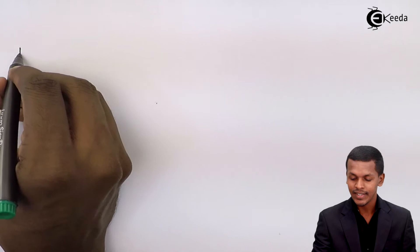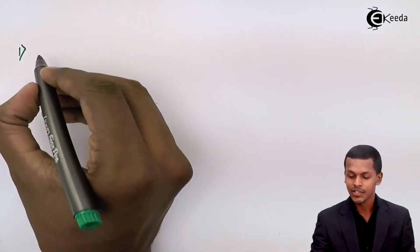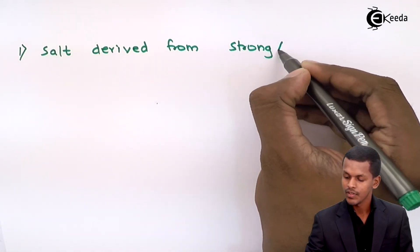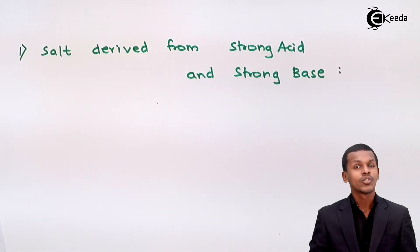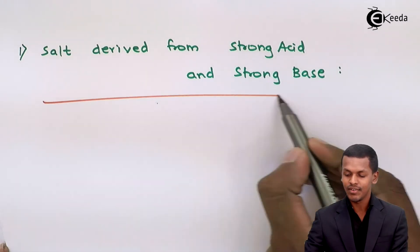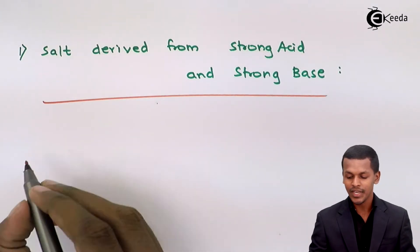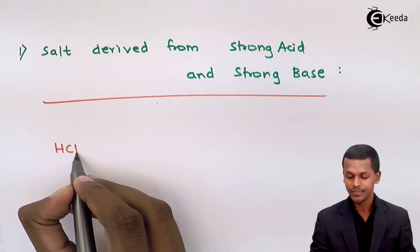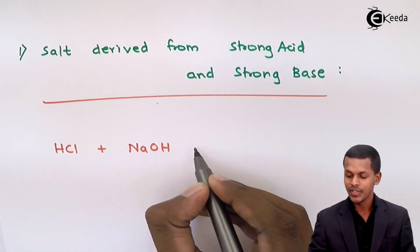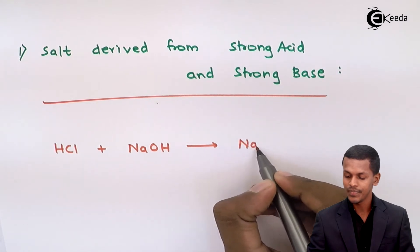The first type is basically the salt which is produced from a strong acid as well as a strong base. For example, if we take a strong acid like HCl and combine it with a strong base like NaOH, we will get NaCl along with H₂O.